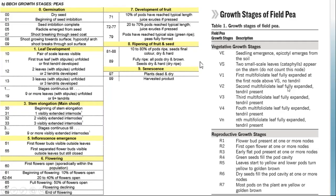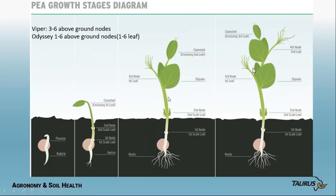Now we're going to look at staging. I've included both the BBCH platform — more European, related to Zadok staging — and a newer one used on peas in the US based on similar principles to soybean vegetative and reproductive staging. We'll spend a lot of time on how the seed gets going and germination, leaf staging relative to herbicide, and flowering. Ripening won't be covered much — most people know how peas ripen.